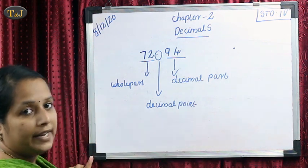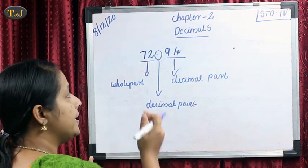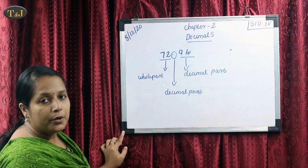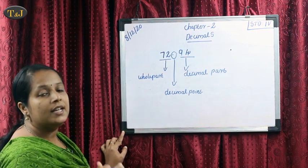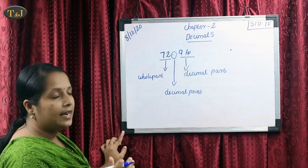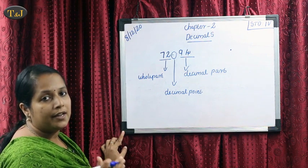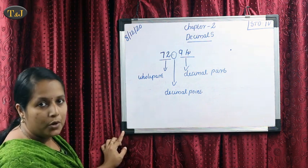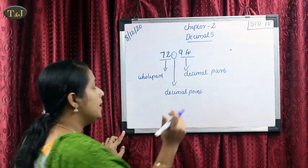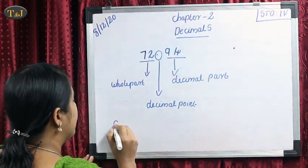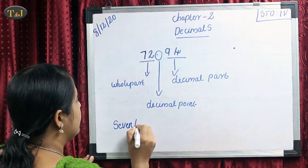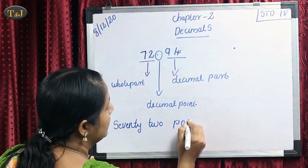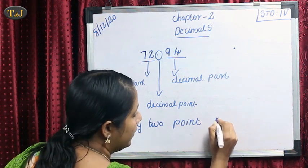After the point, we read the number as single digits. That means we do not read this number as 94. The digits are 9 and 4, so we read them as 9 and 4. This number is read as 72 point 9 4, not 94. So we write 72 point, not 94, but 9 and 4.